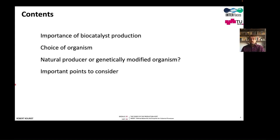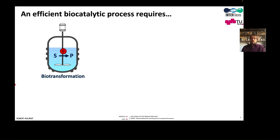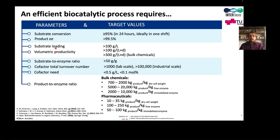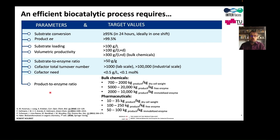An industrial biocatalytic process aims to convert a substrate to a product, and our enzyme facilitates this process. By adding more enzyme we can make it faster, so we want to achieve a high volumetric productivity. Here we show a few target values for a successful process — these numbers are taken from the publications shown in the lower left corner and will be discussed in more detail later in this MOOC. A good process should have very high substrate conversion — we want to achieve complete conversion of the substrate to the product.